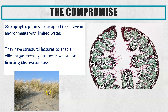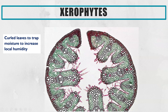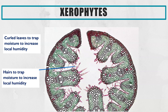Looking at the marram grass adaptations: first, the leaf is actually curled up. Any water that evaporates tends to get trapped in this area, making it very humid, which reduces the water potential gradient from inside the plant to outside and therefore reduces further evaporation. The second adaptation is the pink hair-like structures sticking out. These trap water evaporating from the leaf, again making it really humid to reduce the water potential gradient and therefore reduce evaporation and transpiration.